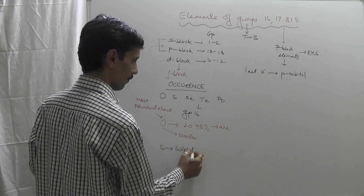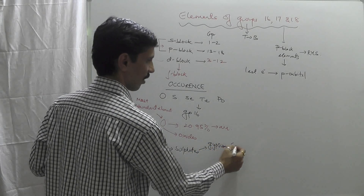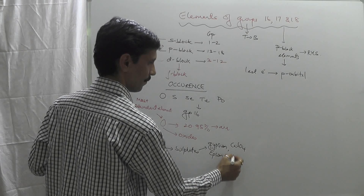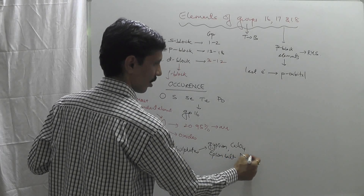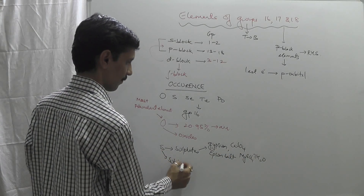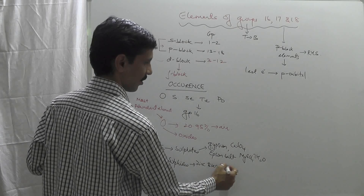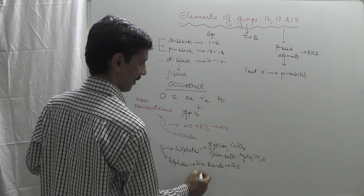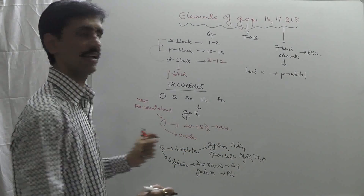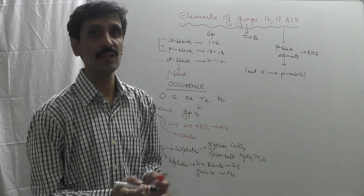Sulfur is present in the form of sulfates — for example, gypsum (CaSO4·2H2O) and Epsom salt (MgSO4·7H2O). Sulfur is also present in the form of sulfides — for example, zinc blende (ZnS) and galena (PbS). So basically sulfur exists in large proportions as sulfates as well as sulfides.